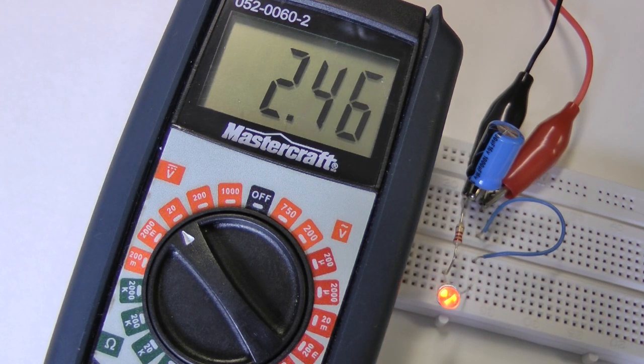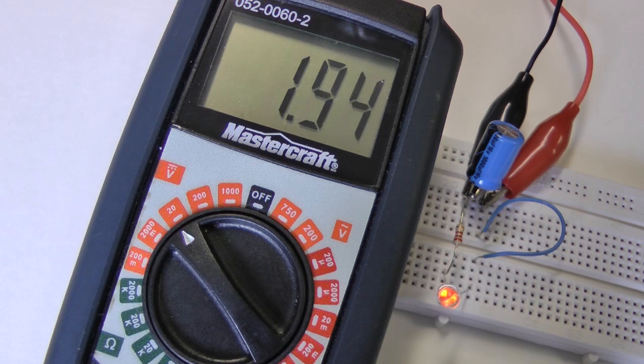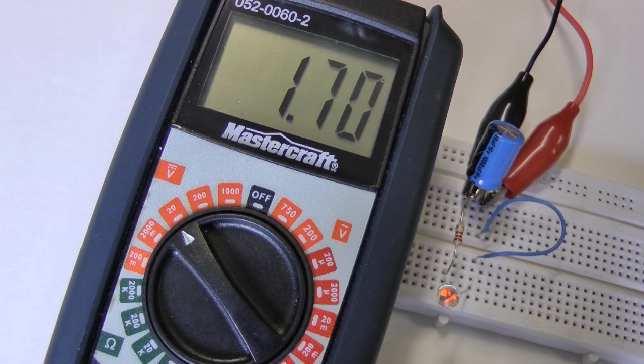Notice the rate of discharge slows as the voltage drops below 2 volts. This is a function of the threshold voltage of an LED, the minimum voltage needed to move current through the device.